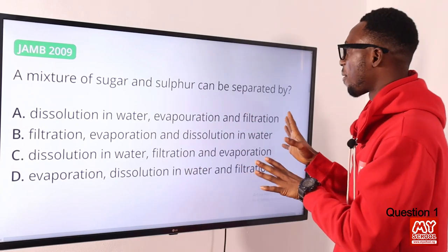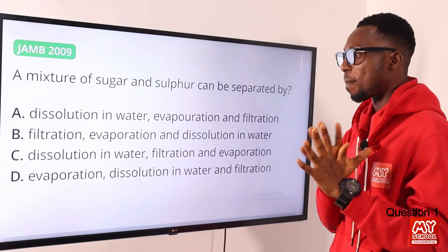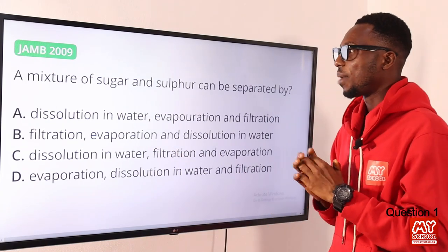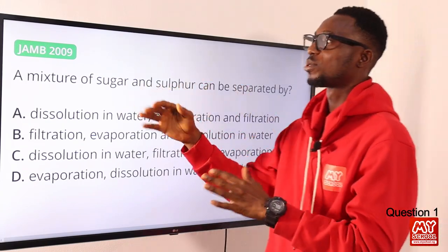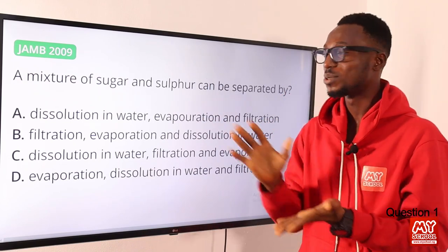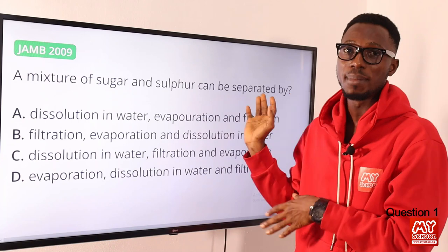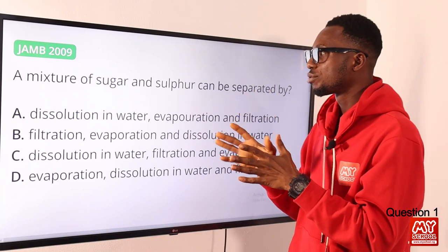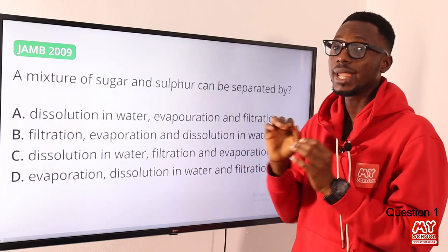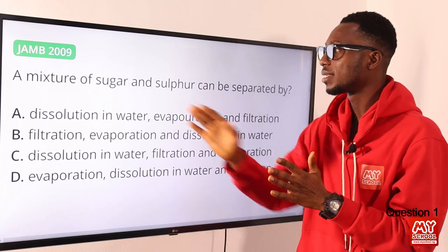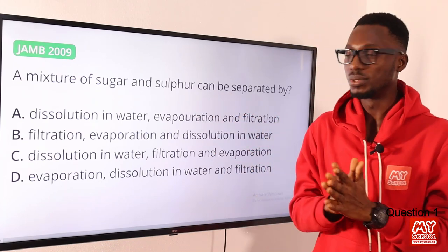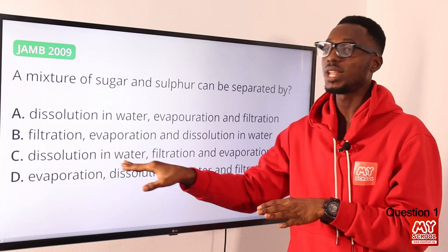A mixture of sugar and sulfur can be separated by what methods — the correct order of these methods. We know that sugar is soluble in water, while sulfur is not soluble in water; it is soluble in toluene (methyl benzene). So we are going to try dissolving sugar and sulfur in water — the sugar will become part of the solution while the sulfur won't. So the first step is dissolution in water.